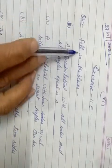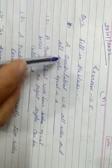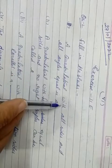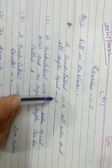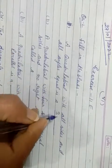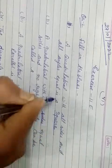Let's start question number 2 of exercise 11E. A quadrilateral with all sides and all angles equal is a square, because all angles are 90 degrees equal.